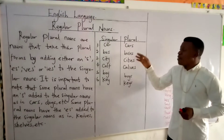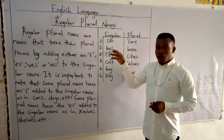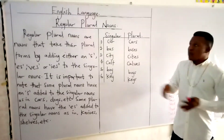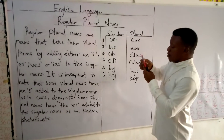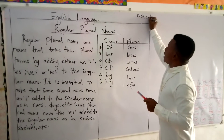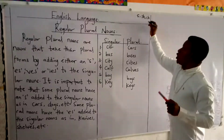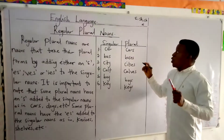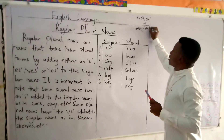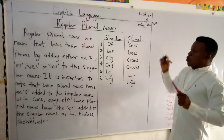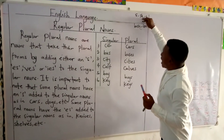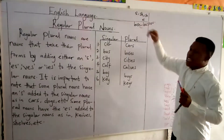Now why do we have buses? Why do we have the ES added to the word bus? Because whenever a noun ends with an S, ends with SH, or CH, what you have to do is add ES to the singular noun. For example, when you have bush, it gives you bushes. So whenever your singular noun ends with S, SH, or CH, just add ES to form the plural.